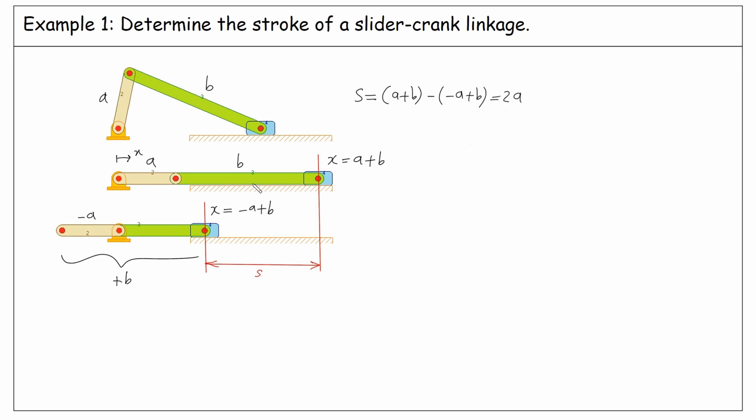Therefore, for a slider crank mechanism without offset, the stroke is equal to twice the length of the crank.